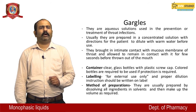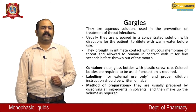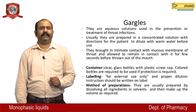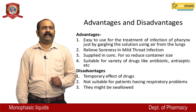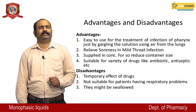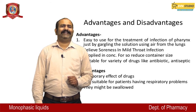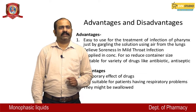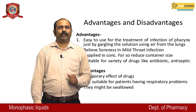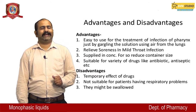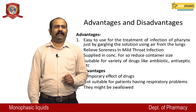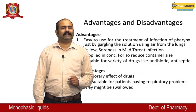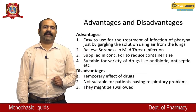Method of preparation of gurgles: they are usually prepared by dissolving all ingredients in the solvent and then making up the volume as required. Advantages: easy to use for treatment of infection of the pharynx just by gargling the solution using air from the lungs; relieves soreness in mild throat infections; supplied in concentrate form so reduced container size; suitable for a variety of drugs like antibiotics and antiseptics.